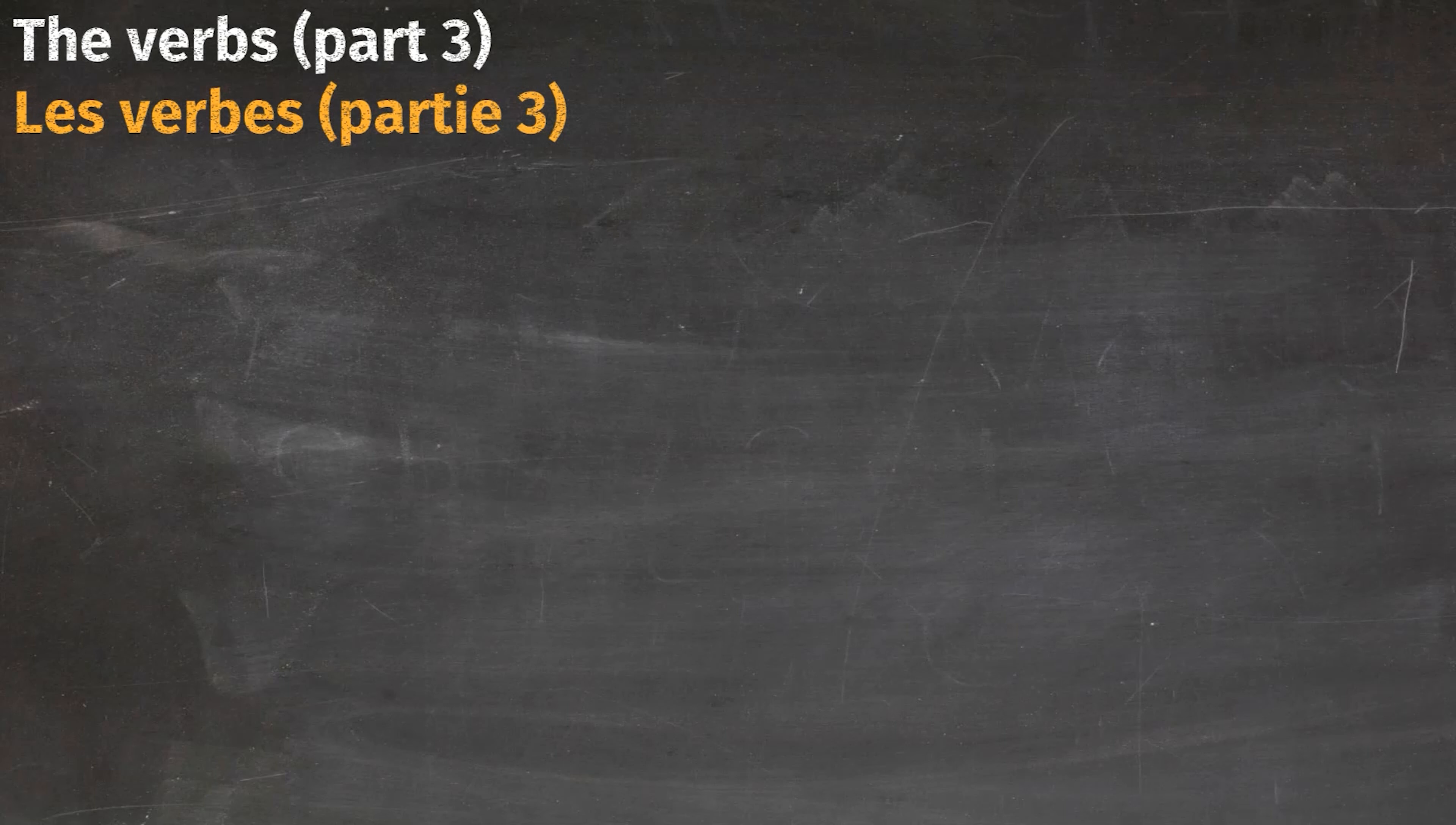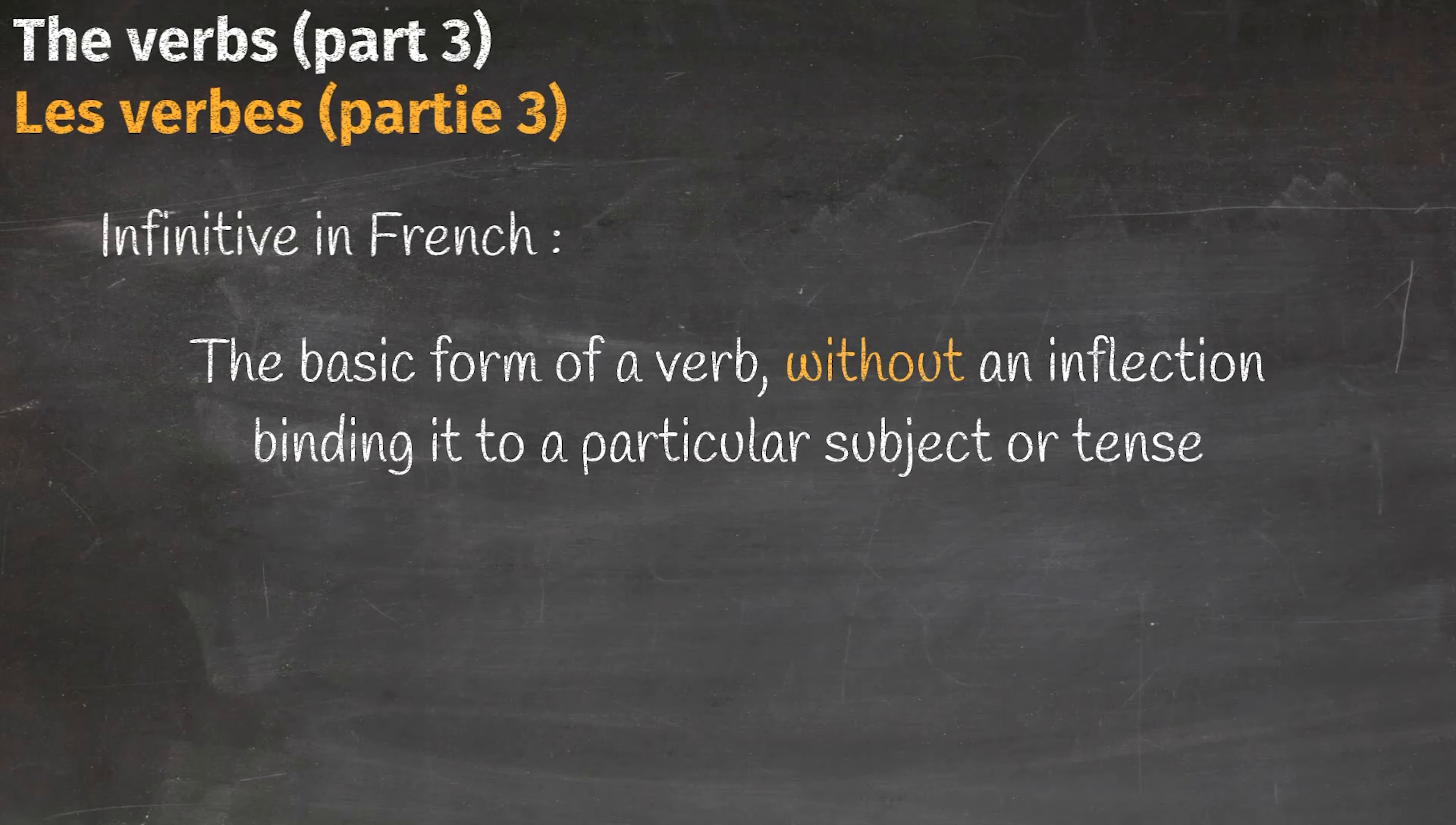All right everyone, let's start with basics. What is an infinitive verb? Well, the basic form of a verb without an inflection binding it to a particular subject or tense. For example, to write, to read, to sell - these are all infinitive verbs in English language.